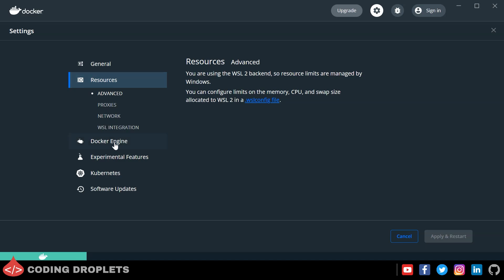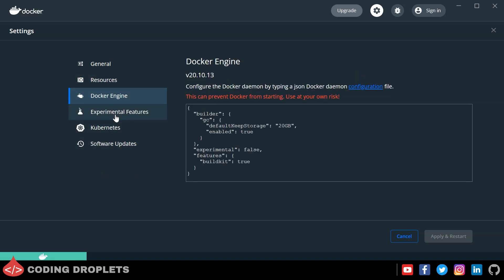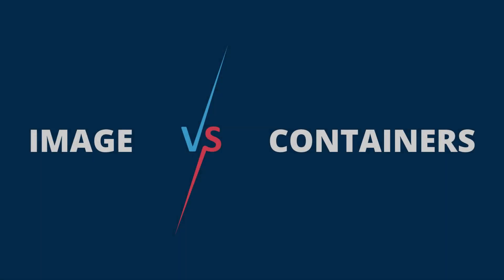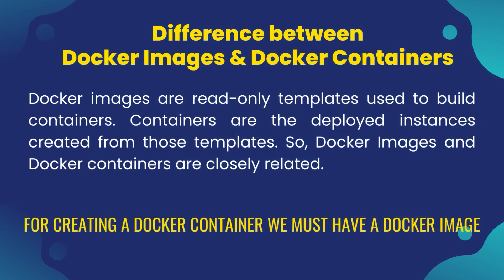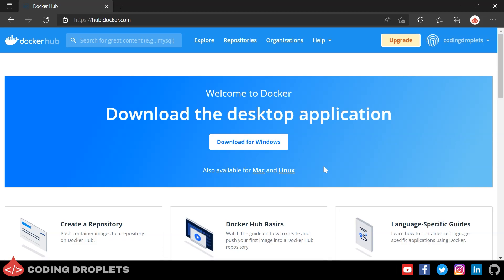You first need to understand the difference between a Docker image and a Docker container. Docker images are read-only templates used to build containers. Containers are the deployed instances created from those templates. Docker images and containers are closely related, but to create a Docker container you must first have a Docker image.